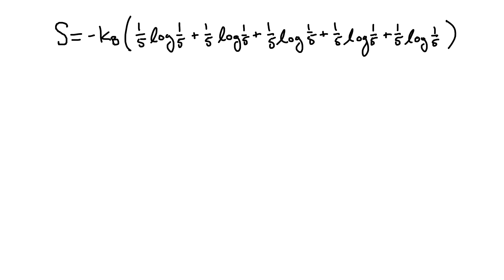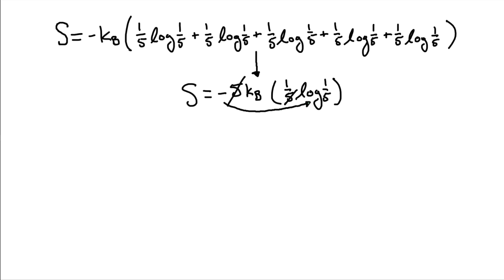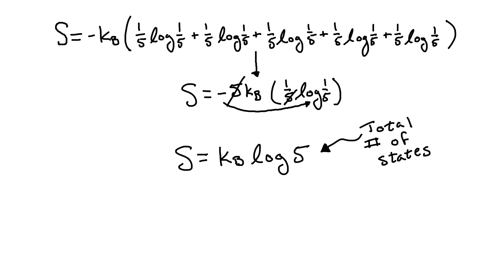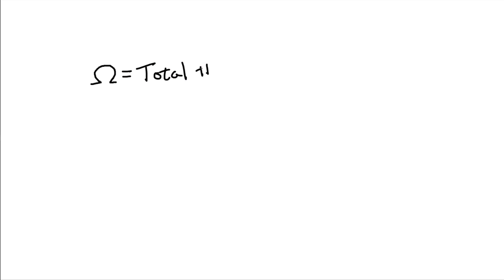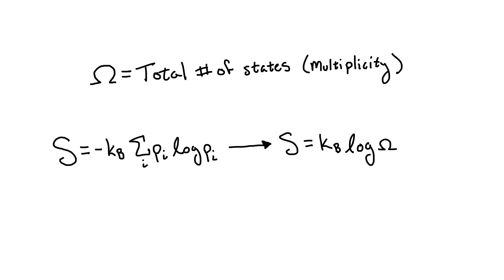Since all five terms in our sum are identical, we can pull out a factor of 5. Each term is also multiplied by 1 fifth, so we can also pull this out, which will cancel the factor of 5. Finally, we can put the negative sign into the logarithm and find that the entropy in this case is just the Boltzmann constant times the log of the number of states. In fact, this is true whenever we have a system where all of the possible states are equally likely. Calling the total number of possible states, also known as the multiplicity, omega, entropy can just be given by this formula.